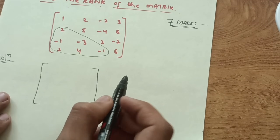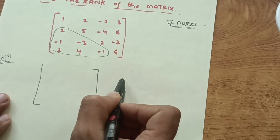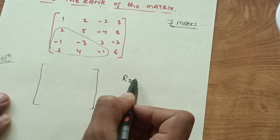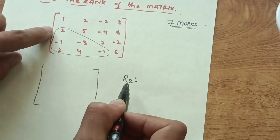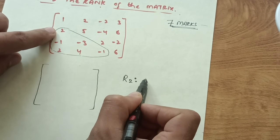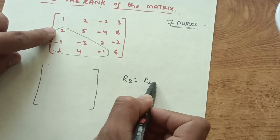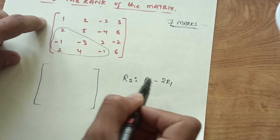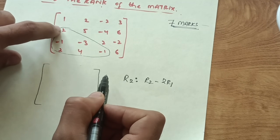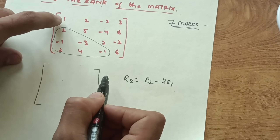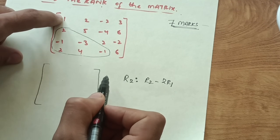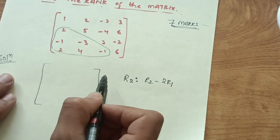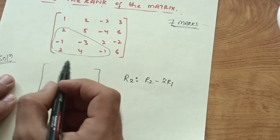First, I do the transformation on row 2: R2 → R2 - 2×R1. So 2 minus 2 times 1 equals 0, making the first entry of row 2 become zero.